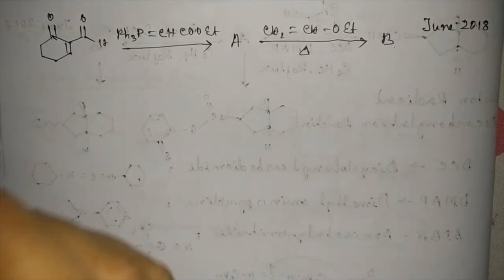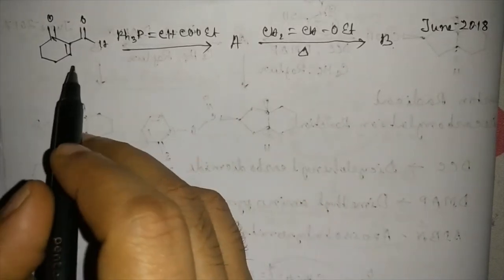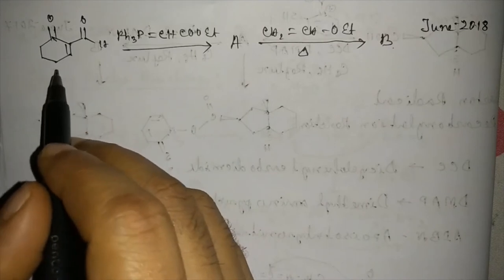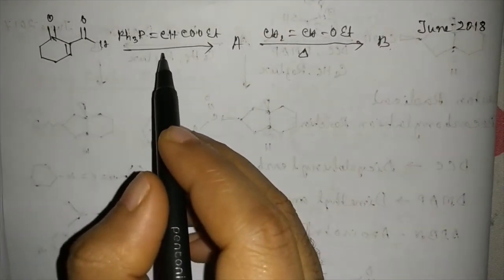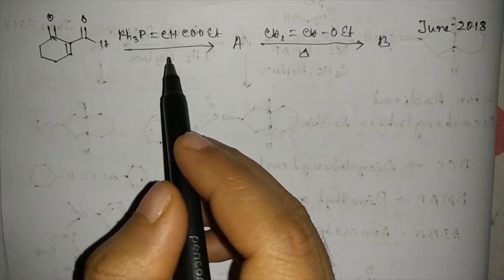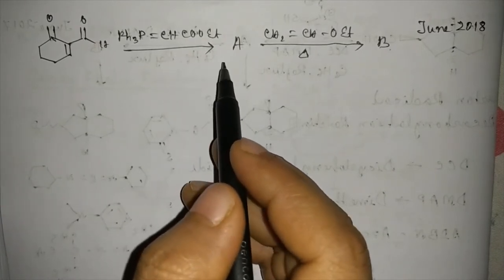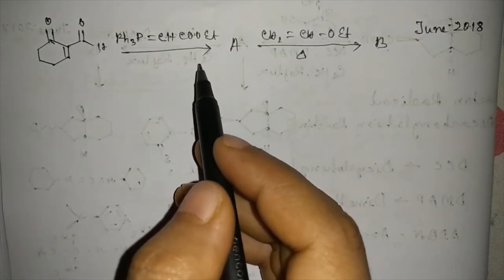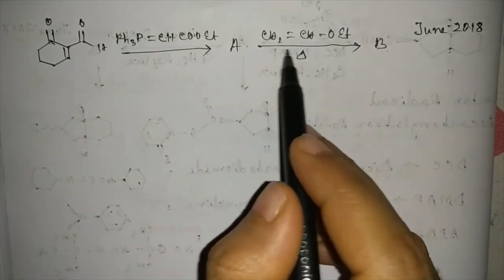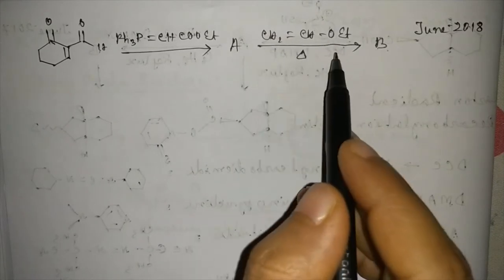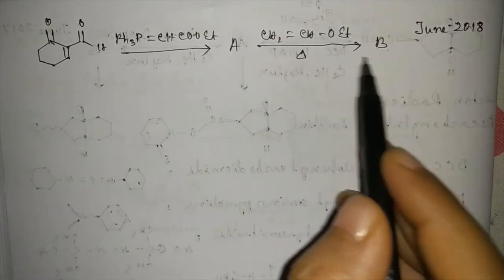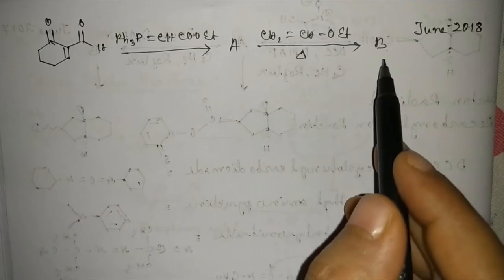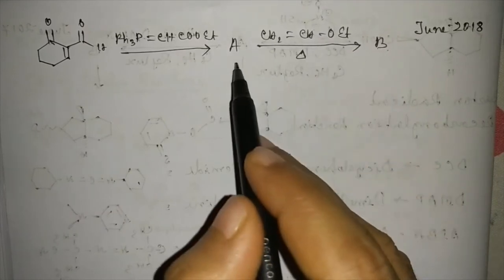Hello students. Today I am here with another interesting question: this substrate reacts with this ylide to form product A, and then reacts with vinyl ethyl ether to form product B. We have to identify A and B.